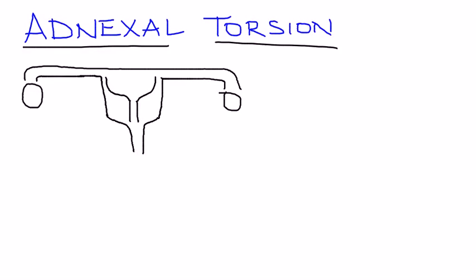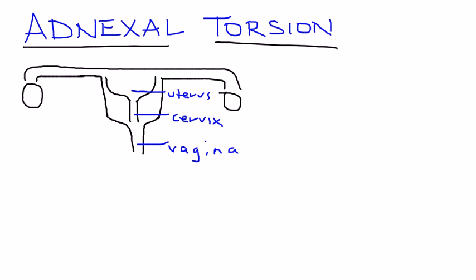We'll be discussing adnexal torsion, and I'll label this diagram to better illustrate this point. This is the vagina, this is the cervix, this is the uterus. Now this is one of the ovaries and this is the fallopian tube.